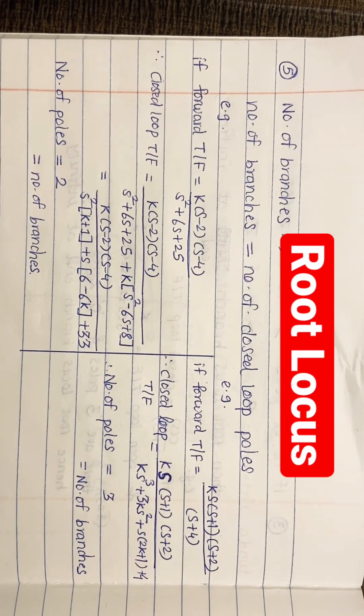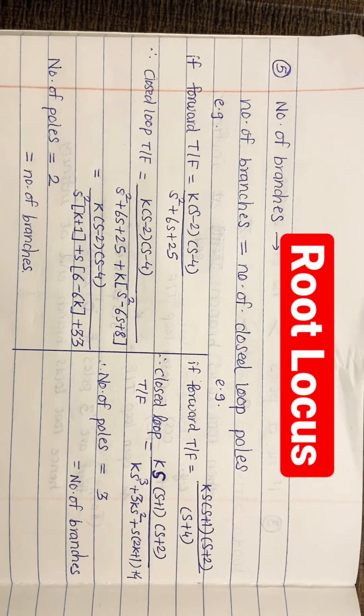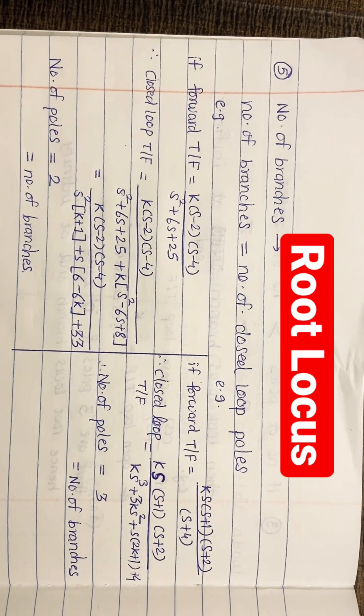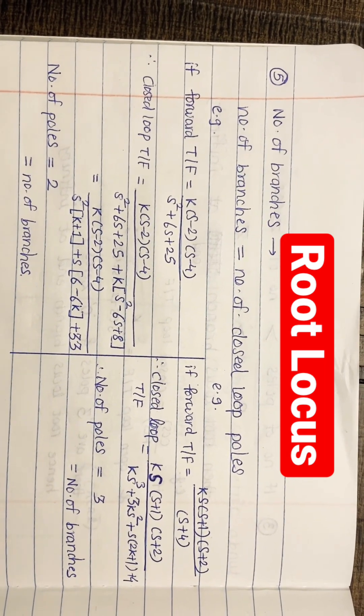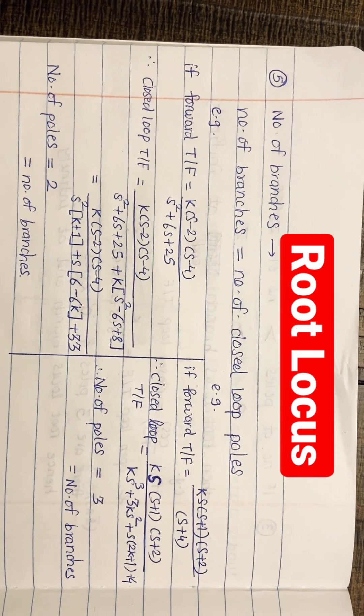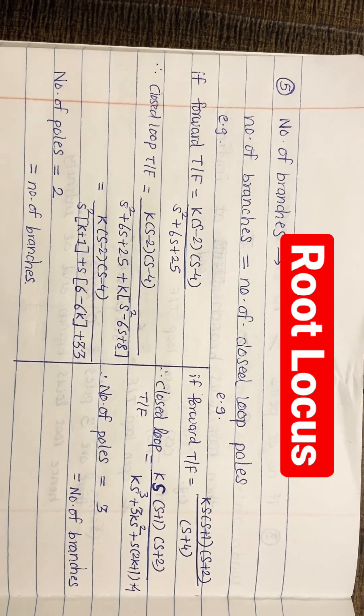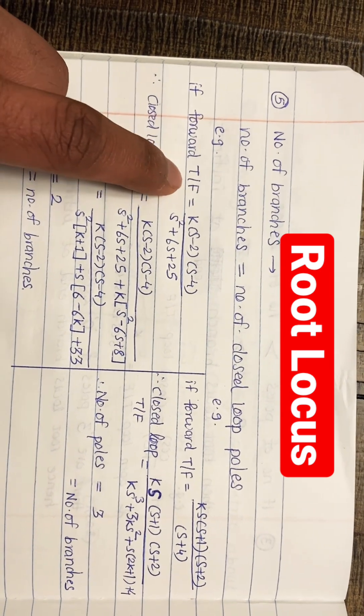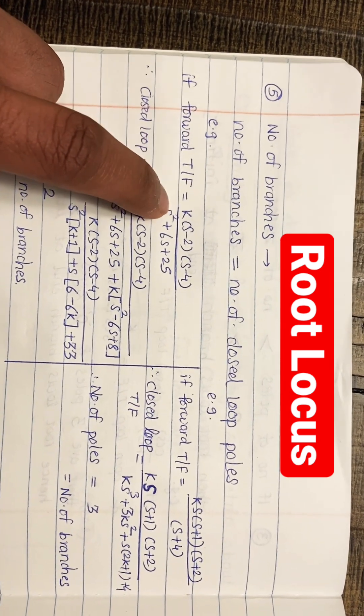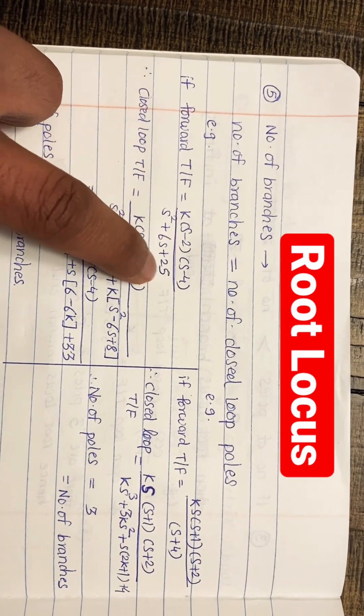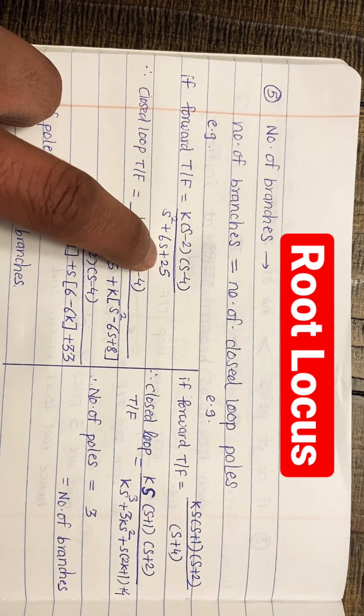Sketching root locus rule number 5: how to find number of branches. Number of branches equals number of closed loop poles. Let's take an example. If forward path transfer function is K times (s minus 2)(s minus 4) divided by (s squared plus 6s plus 25).